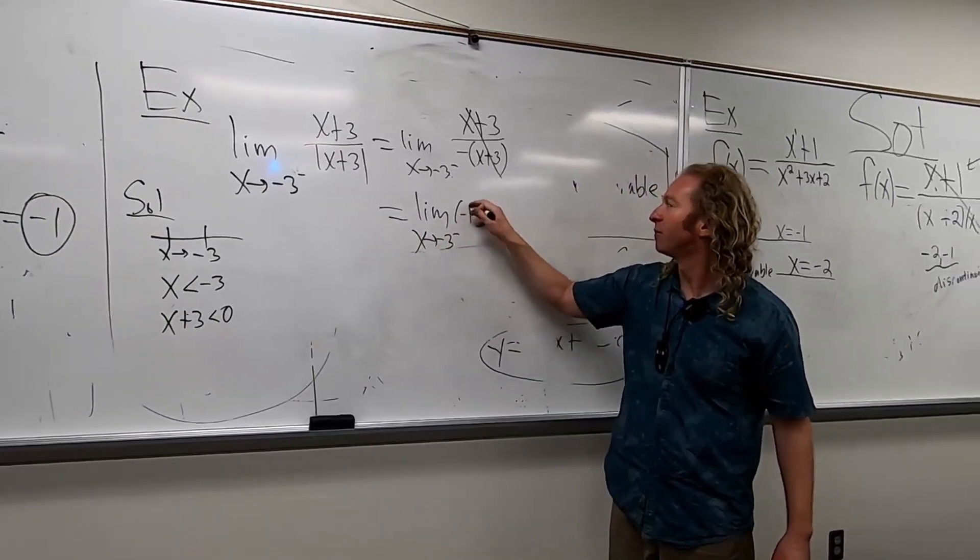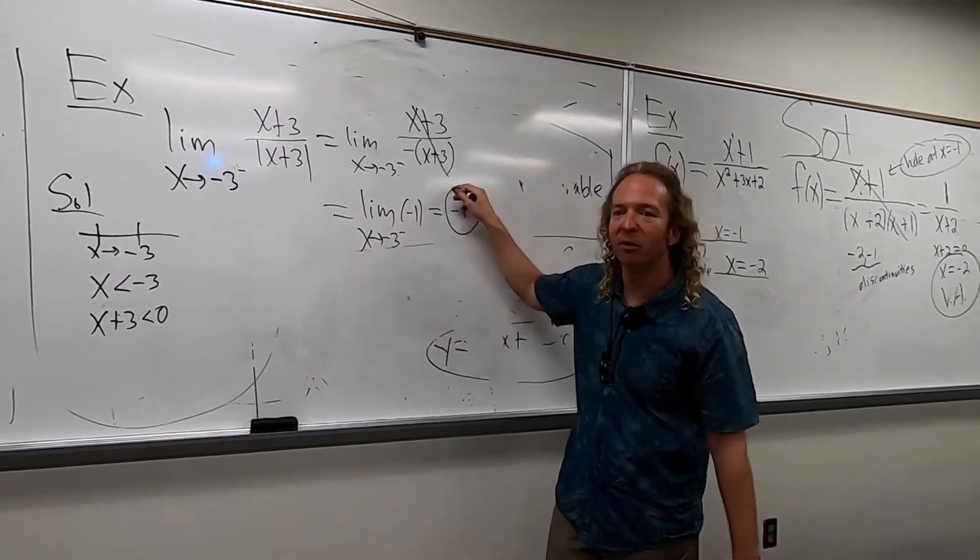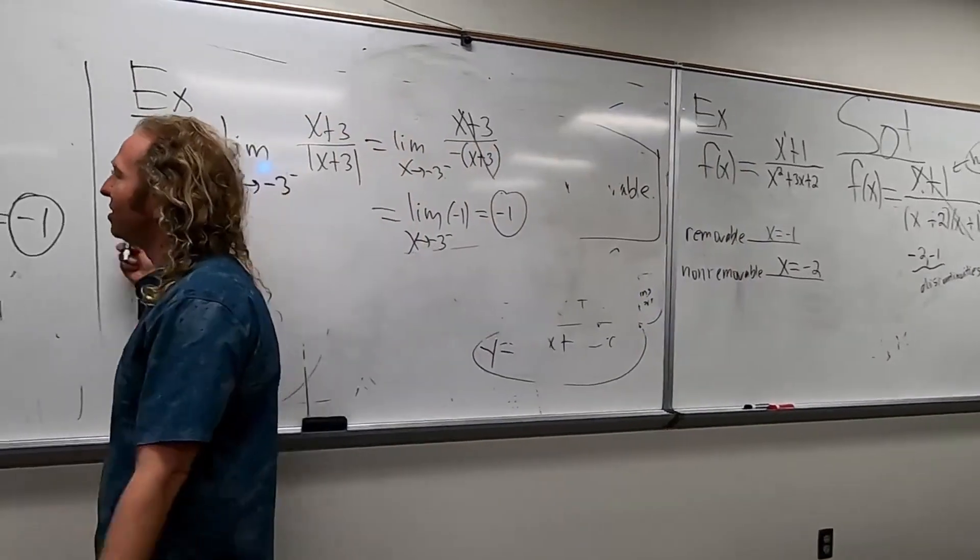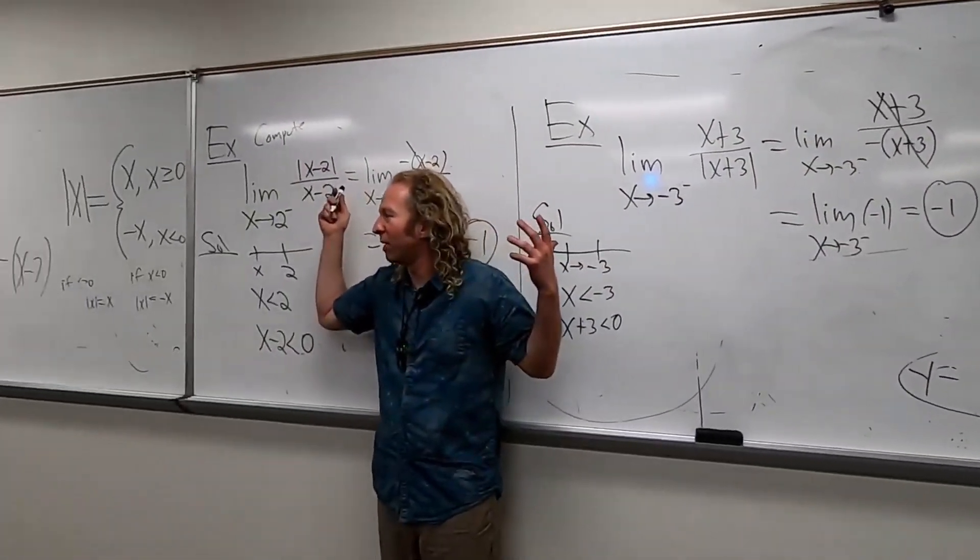So then this will just be negative one. So you just get negative one again. So I didn't want to do the plus because the plus one's easy. The plus one, you just don't put the minus, right? All right.